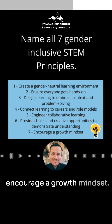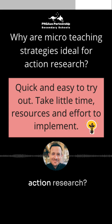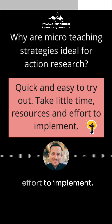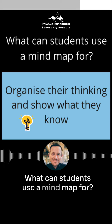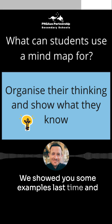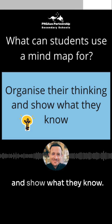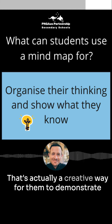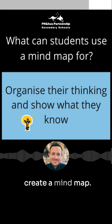Why are micro teaching strategies ideal for action research? They're quick and easy to try out — they take little time, resources, and effort to implement. What can students use a mind map for? We showed you some examples last time. A mind map is useful to organize their thinking and show what they know. It's a creative way for them to demonstrate their understanding — instead of just writing, they might create a mind map.